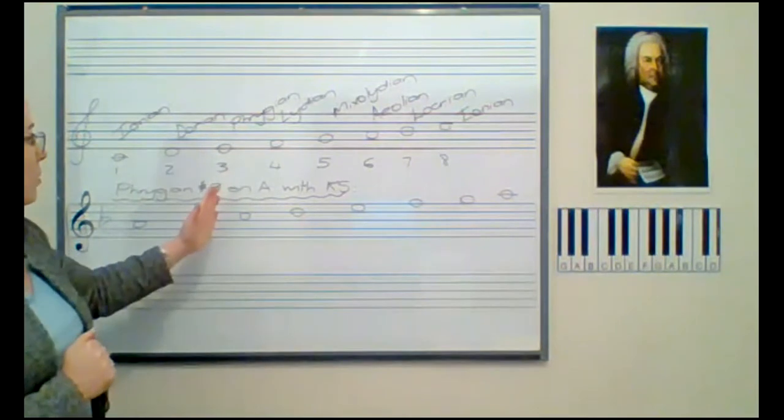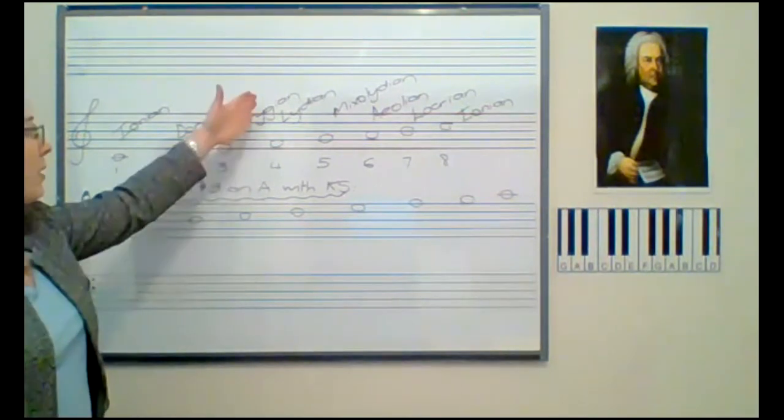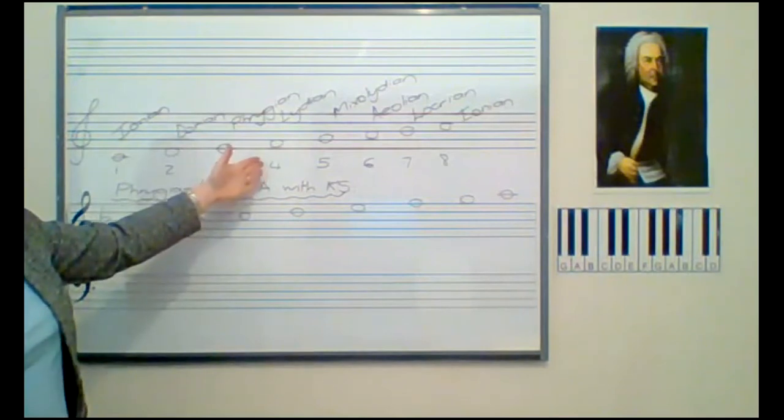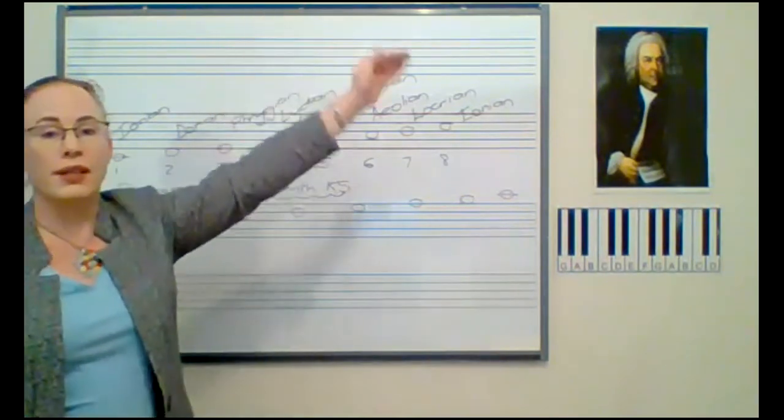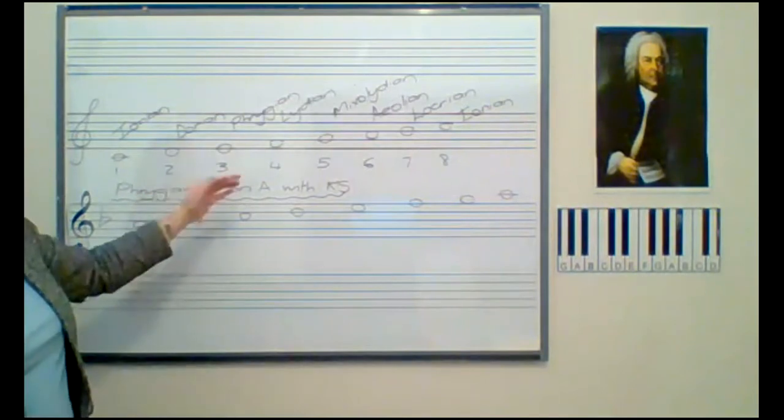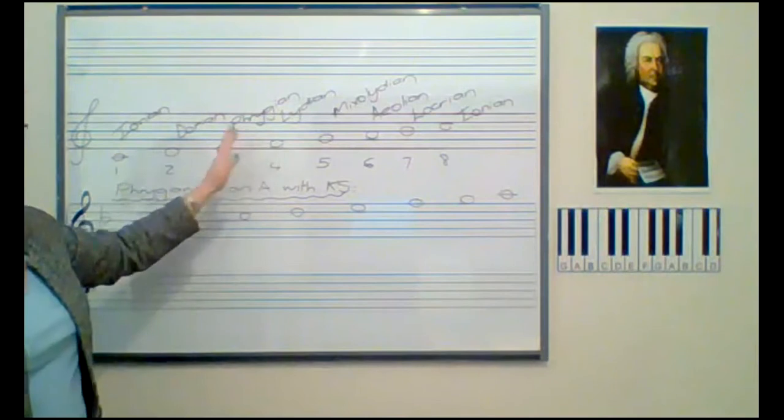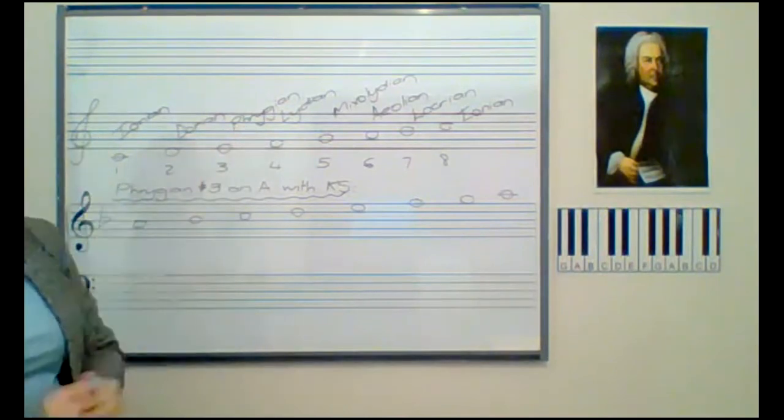So you start on a specific scale degree. Let's take the Lydian. The Lydian mode always starts on the fourth scale degree, and then it goes to the next fourth scale degree. In other words, the next F, an octave higher. And of course we are using C major.